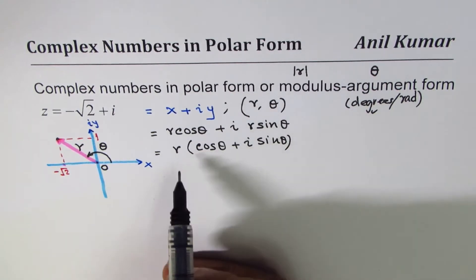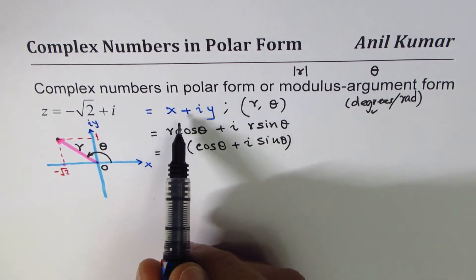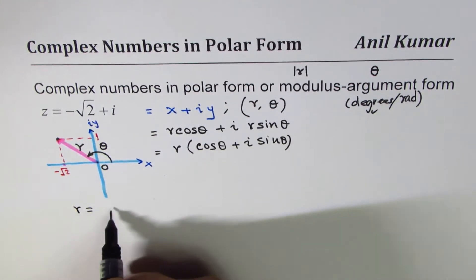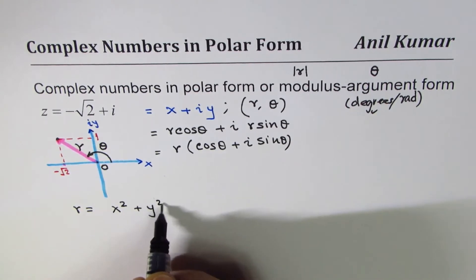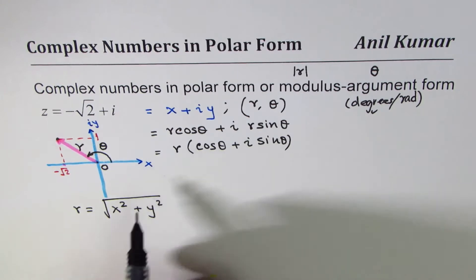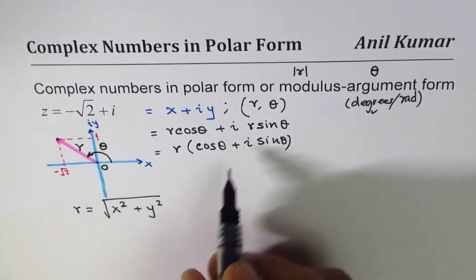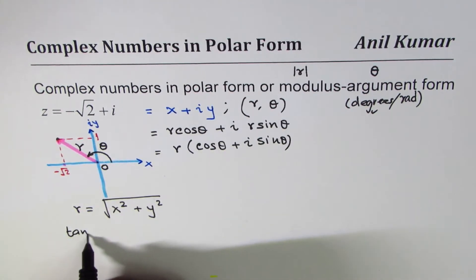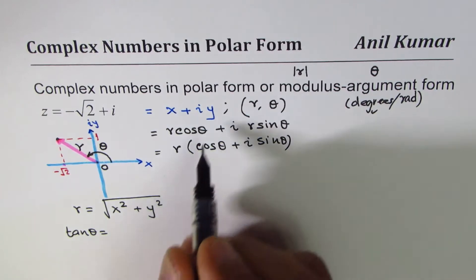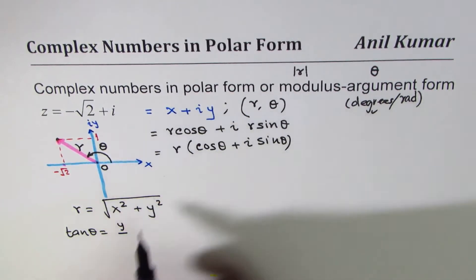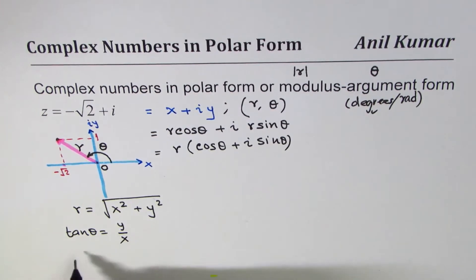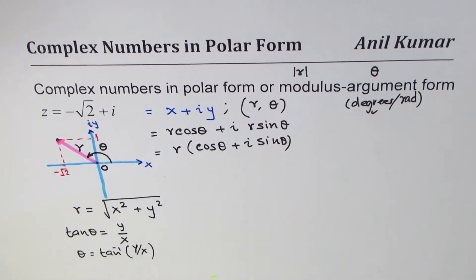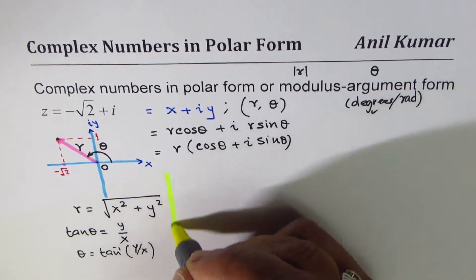Let's find what r is. Given the form x plus i y, we use the formula: r equals the square root of x squared plus y squared. The angle theta is found using tan inverse of y over x, so theta equals tan inverse of y over x. This is the standard formula we can always use.